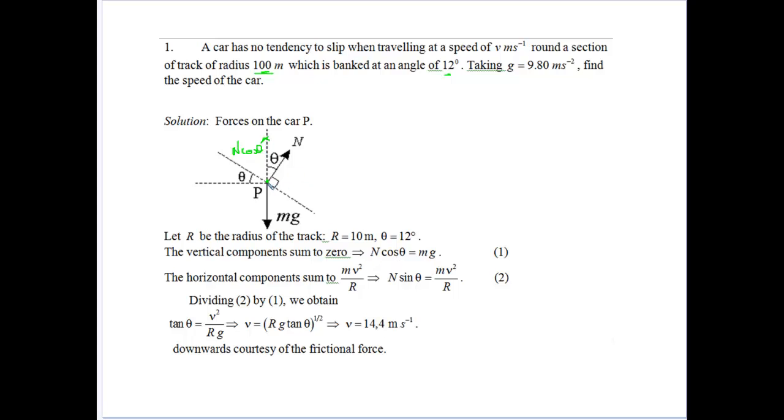And we know in going into the centre there, if that's theta, we'll end up with theta there. So we're going to get n sin theta happening that way. And we're going to have mass V squared on R, because we want to find V in this case. So that's where we get the opposing forces of n sin theta and mv squared on R.